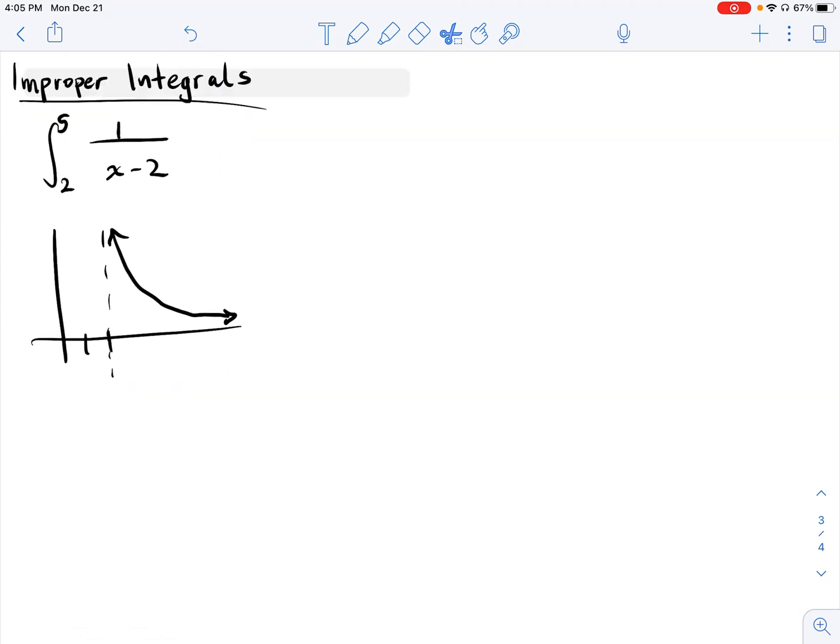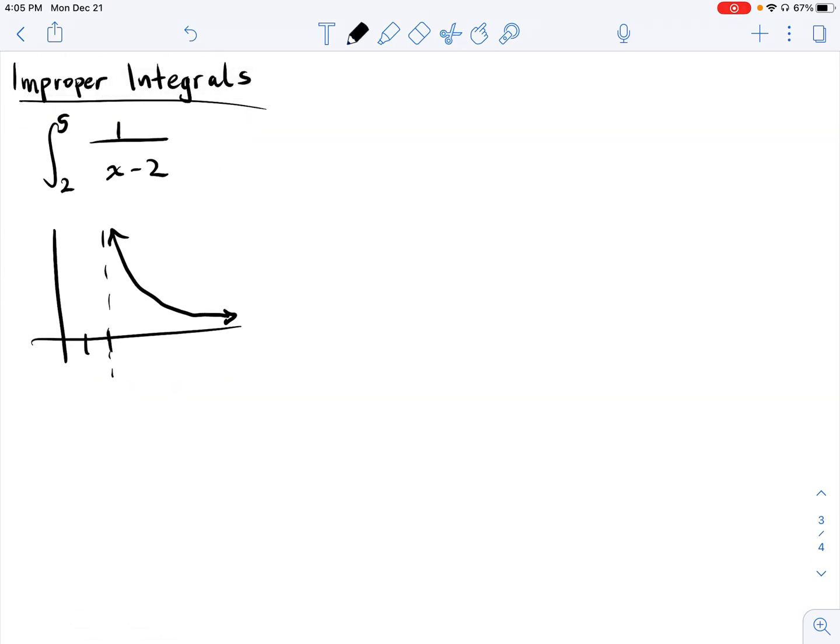For example, if we saw something like this integral from 2 to 5 of 1/(x-2) dx. I've already drawn out the graph for you here, and you can already get a sense that to try to evaluate this definite integral from 2, you would be plugging in infinity.